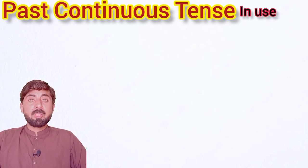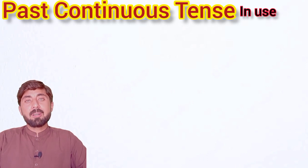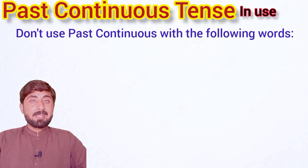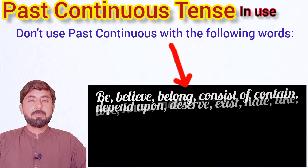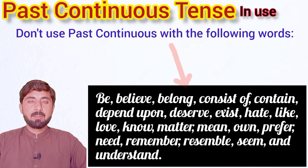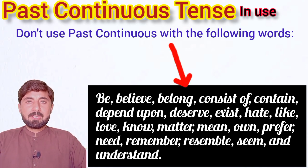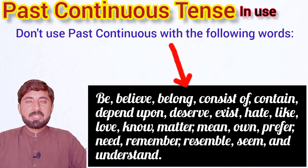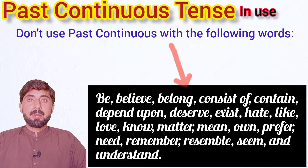Now I will tell you where you should NOT use past continuous tense. Here are some verbs you must note down that cannot be used with past continuous tense. If these words are used as a main verb in any sentence, you should not use past continuous tense. These verbs are: be, belong, consist of, contain, depend upon, deserve, exist, hate, know, love, like, matter, mean, own, need, prefer, remember, resemble, seem, and understand. If these words come in your sentence as a main verb, you should not use past continuous tense.